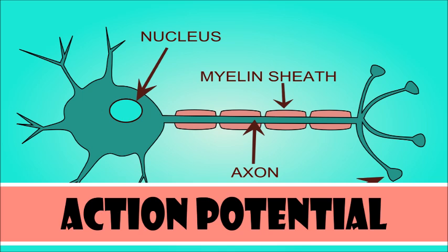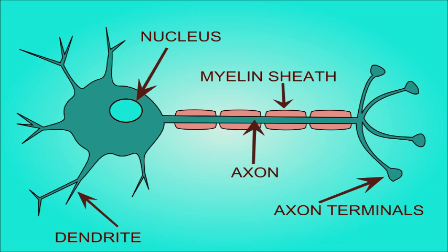An action potential is the neuron's way of transporting an electrical signal from one neuron to the next. This is a picture of a neuron where you have the dendrite in one end and the axon terminal in the other end.